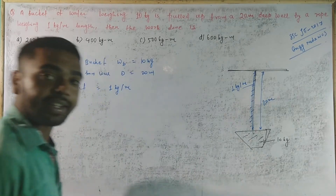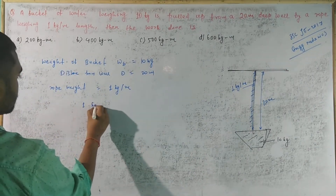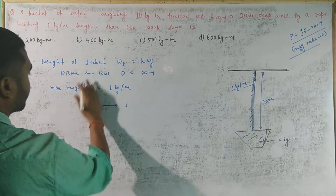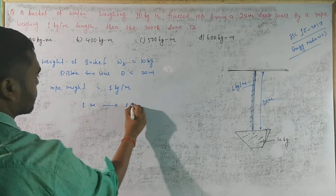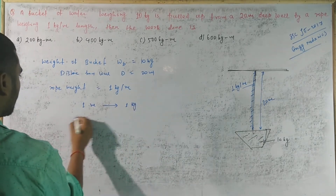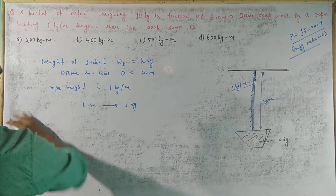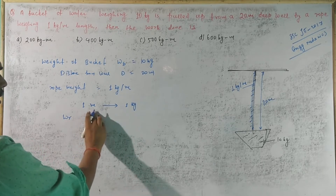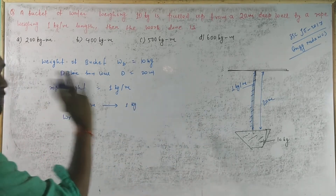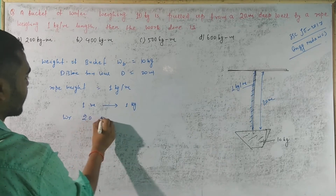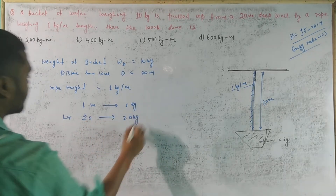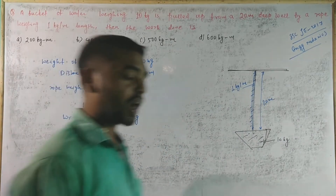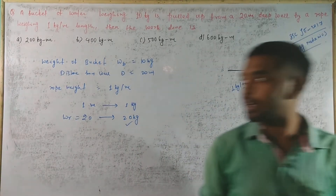1 meter में 1 kg — तो rope weight (WR): 1 kg per meter × 20 meter = 20 kg। तो rope का total weight 20 kg हो गया।